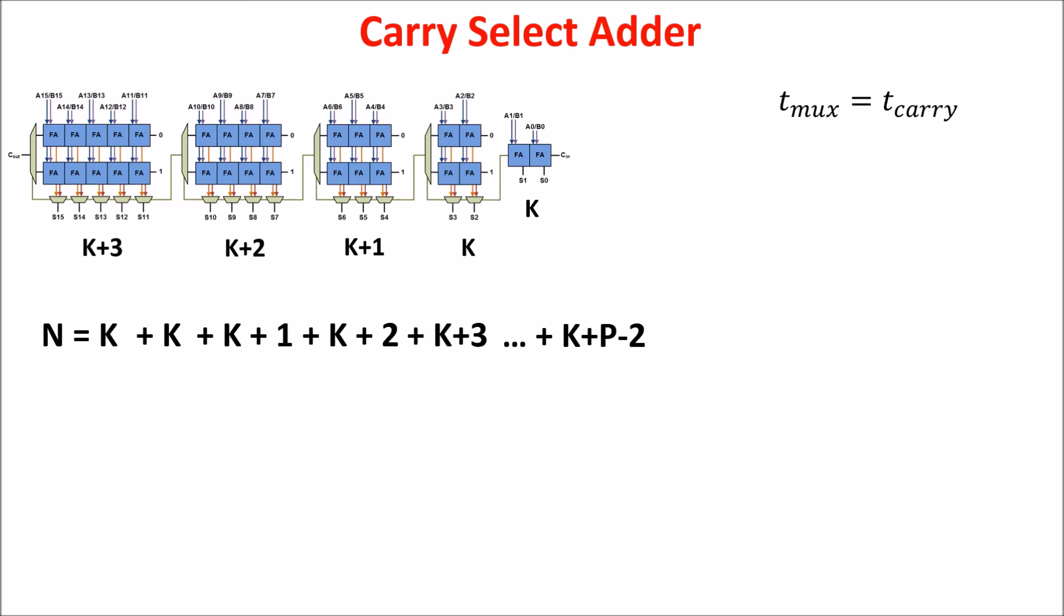We can write the series in this other way, grouping K. We note that we have the series which sums the natural numbers up to P minus 2, so we can write it in a more compact way.